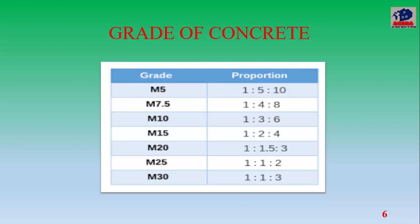There are many grades available in concrete — this is the grade table. Grades range from M5 to M30 for nominal mix, and M25. From M30 — M30, M40, M45, M60 — these are design mix grades, not nominal mix.